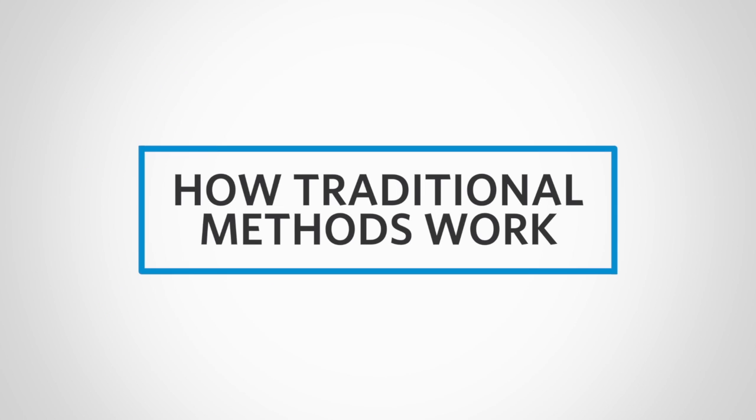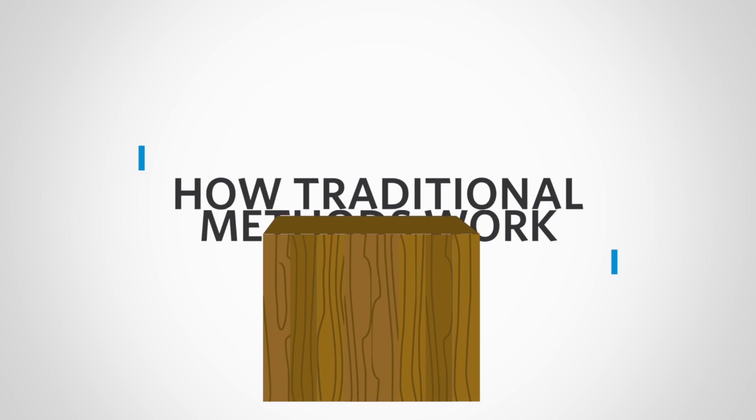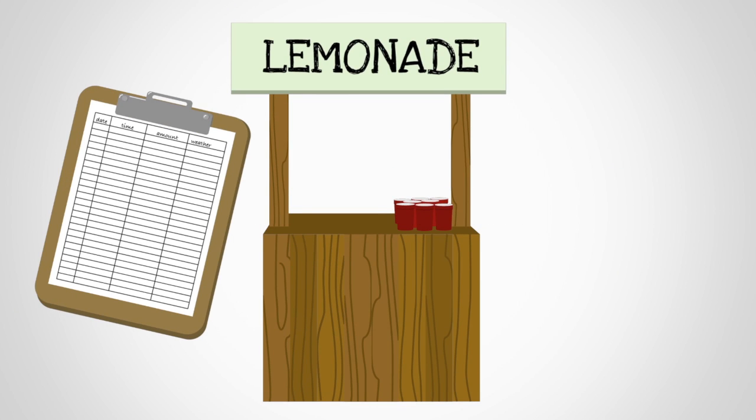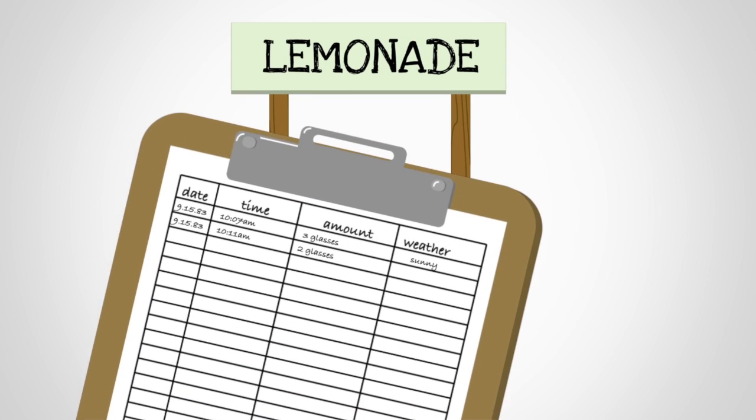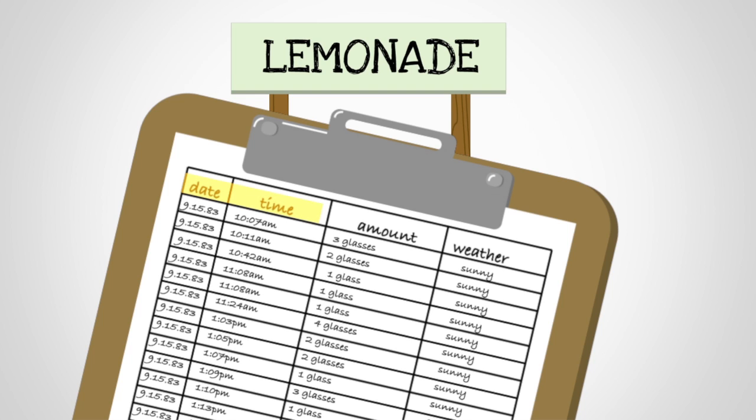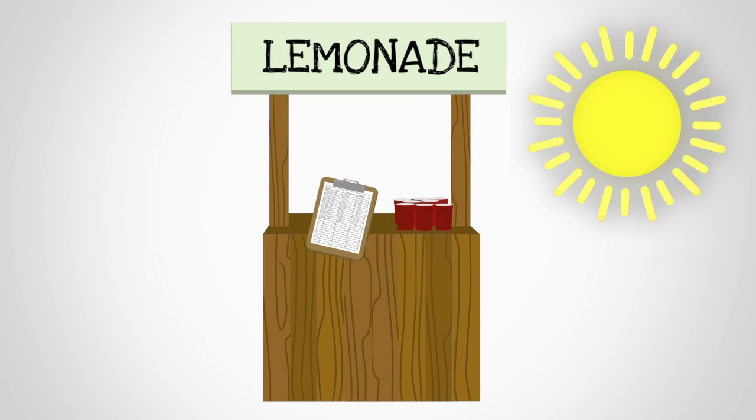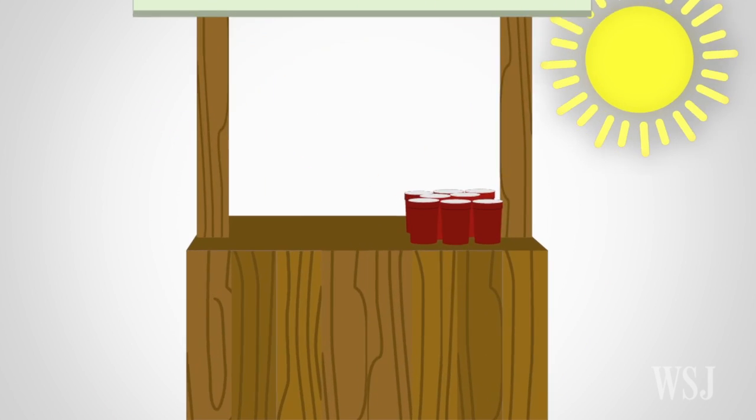But let's start with how traditional methods work. So you have a lemonade stand. Over several months, you build a database that includes the dates and times when customers make purchases. You also have a column where you put whether it's rainy or sunny each day. Looking at it, you see that you sell more lemonade on sunny days.